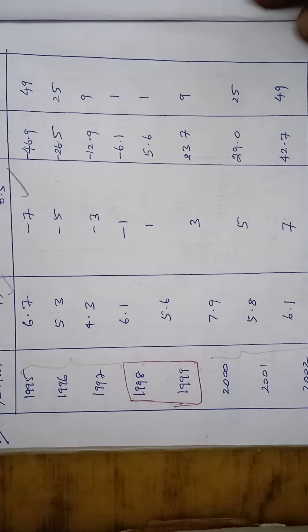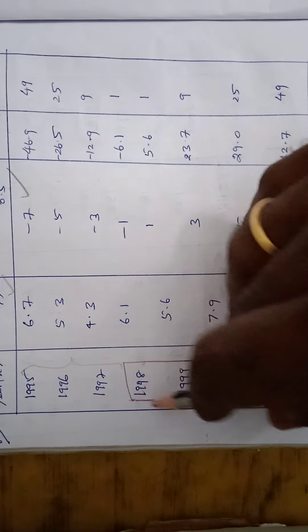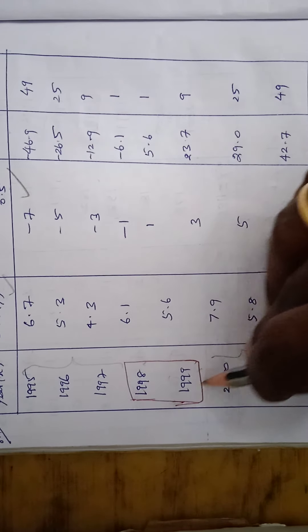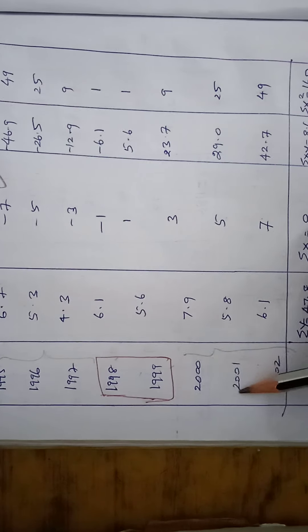8 years are given means 8 is even. So first we have to compute the middle term for this year. So 1995 to 2002.